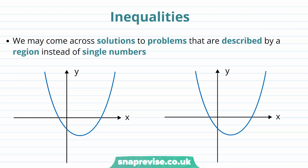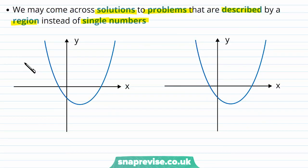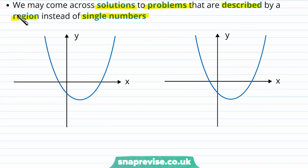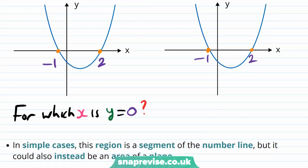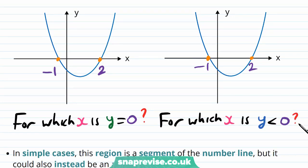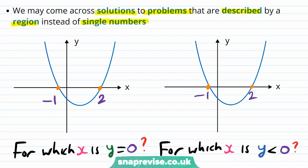So what exactly are inequalities? We may come across solutions to problems that are described by a region instead of single numbers. For example, let's say we have a quadratic and we'd like to ask the question: for which x is y equal to 0? But now we can ask a different question — for which x is y strictly less than 0? We can see graphically that it is all the points in between minus 1 and 2, because the graph is underneath the y-axis, but not at the points minus 1 or 2 themselves, because y equals 0 there.